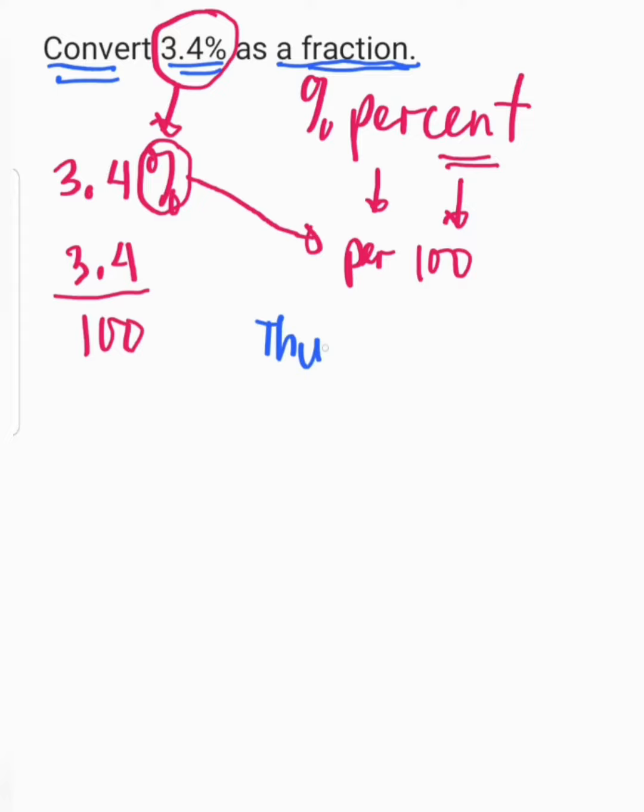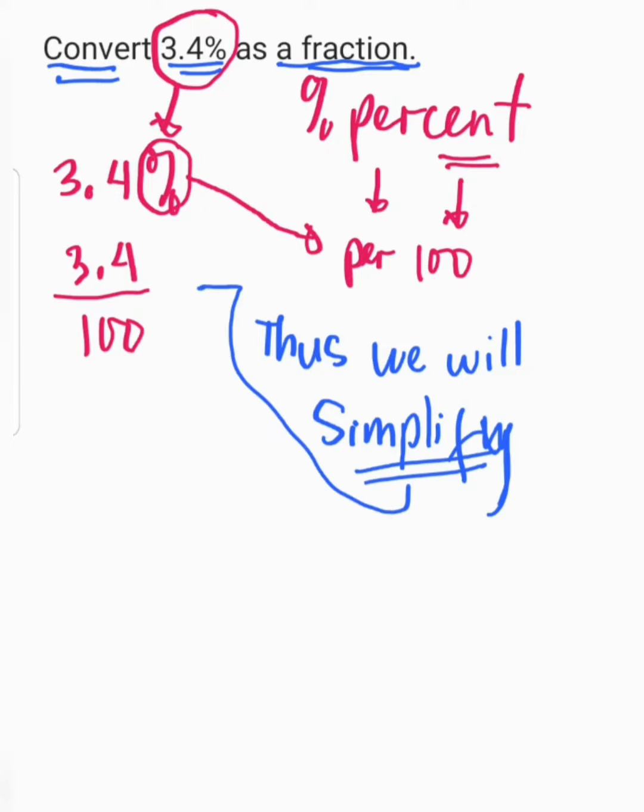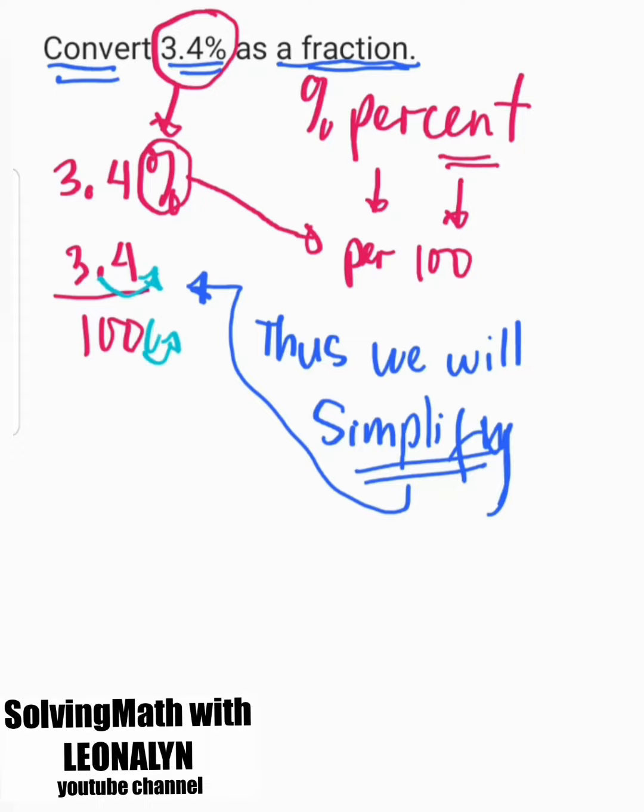We have to simplify this 3.4 over 100. Let's make our numerator 3.4 a whole number. So we have to move 1 decimal to the right. And as we move 1 decimal to the right, we will just add 0 to our denominator.